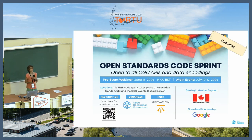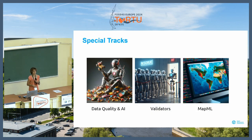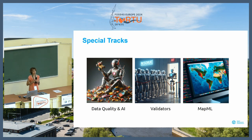There will be one next week in London, at Geovation. It will start Wednesday through Friday. You can still register if you like and even attend online. This code sprint will have three special tracks: one about data quality and AI, one about validators, and another one about MapML. There will be specific activities and people working on these three topics, but it's actually open to all OGC APIs and encodings.